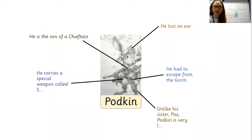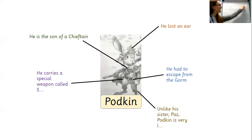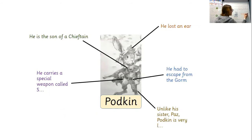A main part of his story in the legend of Podkin One-Ear is that he is trying to escape from the Gorm. When they came to his warren, he had to run away. So we can summarise here by saying he had to escape from the Gorm. You can see how I'm starting to space these out really clearly so that I've got space in between to extend my ideas.